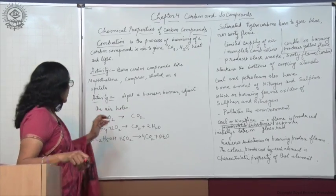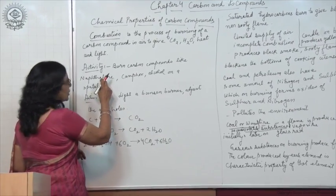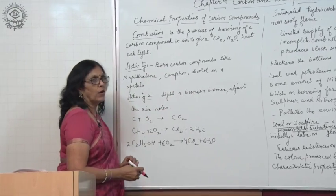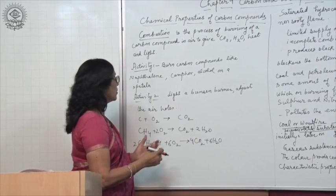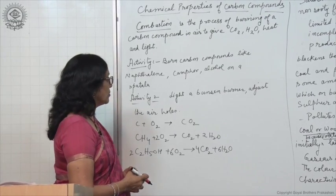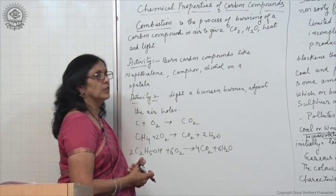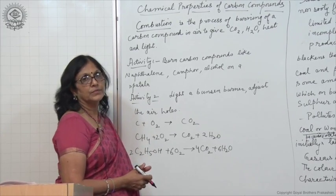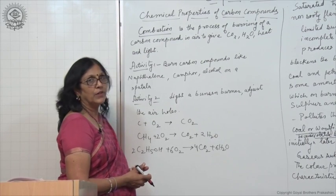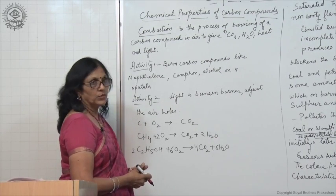Different carbon compounds like naphthalene, camphor, and alcohol are taken on a spatula and then burned over a flame of a Bunsen burner. See how they burn. You will find that these compounds burn with a flame.